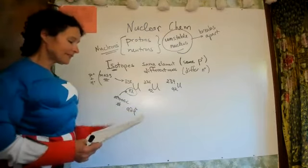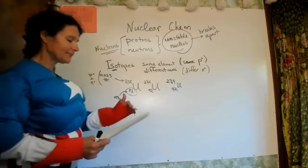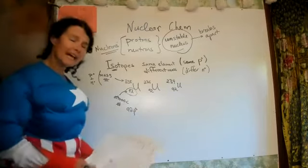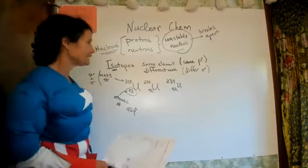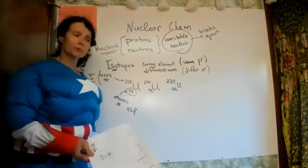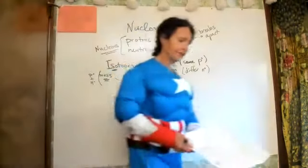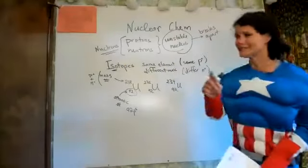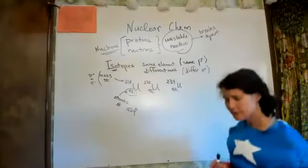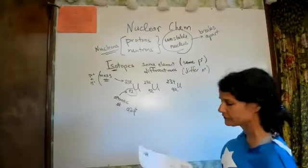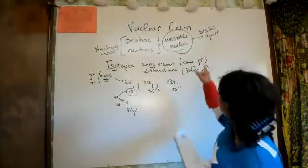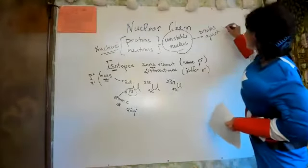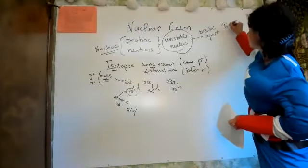The brief bit of history I'll tell you is about ionizing radiation. Ernest Rutherford actually got his Nobel Prize for discovering the alpha and beta particles. When these unstable nuclei break apart, they release ionizing radiation.